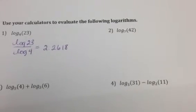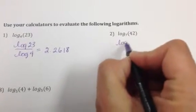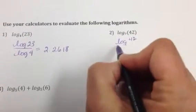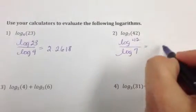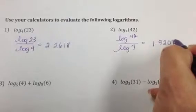All right. For number 2, rewrite it. So we have log of 42 divided by log of 7. And that equals 1.9208.